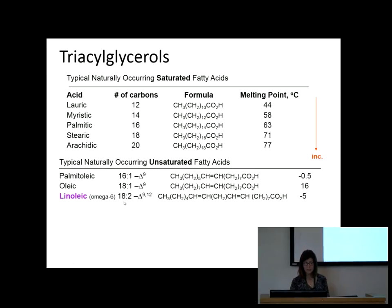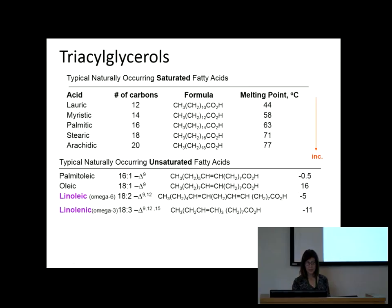Here we have 18 carbons, but instead of just one double bond we put in two — at carbons 9 and 12 — and look what it does to the melting point: it decreases it further. This is also omega-6. Omega-3 has three double bonds — it lowers the melting point even more. Not as strikingly as going from saturated to unsaturated, but the more double bonds you have, the lower the melting point.